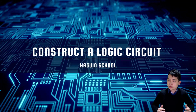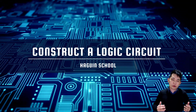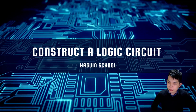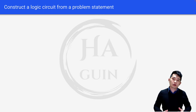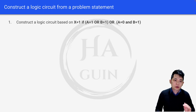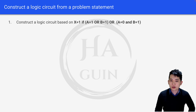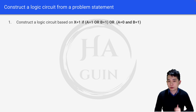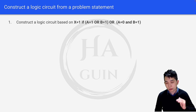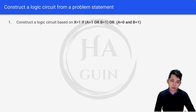Hi there, welcome back. Let's look at how we can construct a logic circuit from a given problem statement. The problem statement is: construct a logic circuit based on x equal to 1 if a equal to 1 or b equal to 1, or a equal to 0 and b equal to 1.